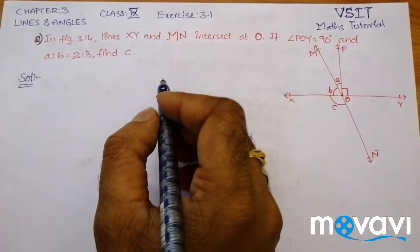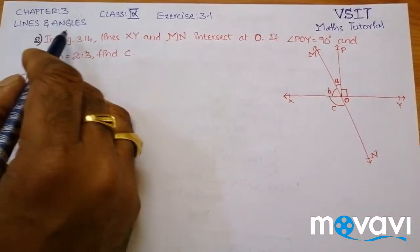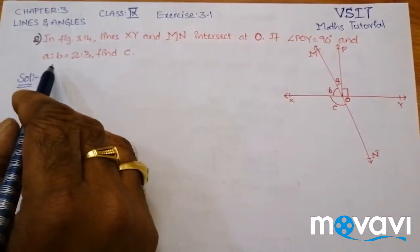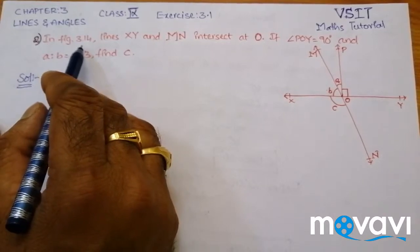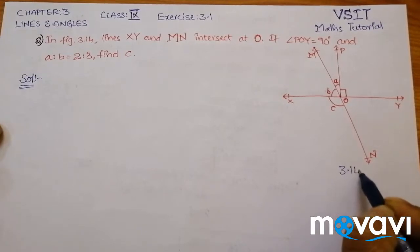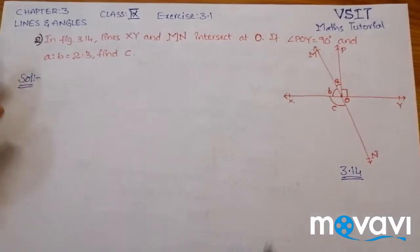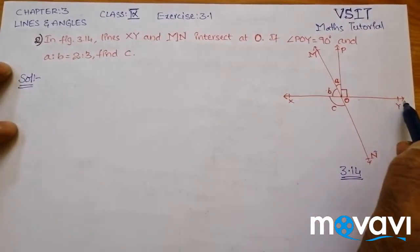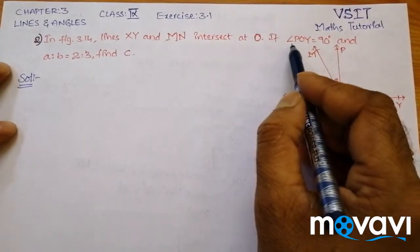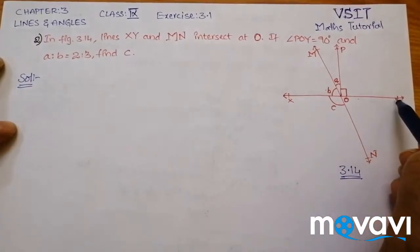This is the question from exercise 3.1 of the chapter Lines and Angles of class 9. The question refers to figure 3.14, where lines XY and MN intersect at O. If angle POY is 90 degrees...